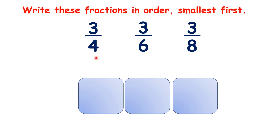Now let's try three-quarters, three-sixths, and three-eighths. Although we don't have one in the numerator, we do have the same numerator for all of our fractions — they all have three as the numerator. So all we need to remember is that the larger the denominator, the smaller the fraction.